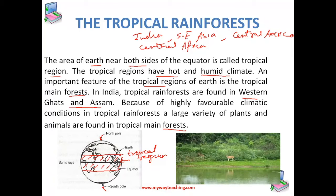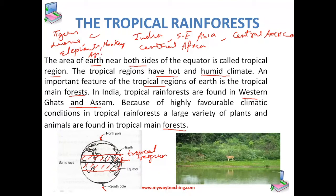The major types of animals living in the tropical forest are tigers, lions, elephants, leopards, monkeys, apes, gorillas, birds, snakes, lizards, frogs, and so on. Almost all kinds of animals live in these forests.